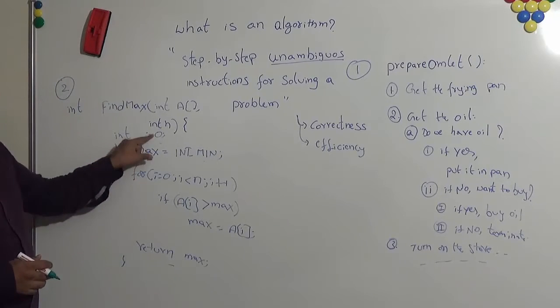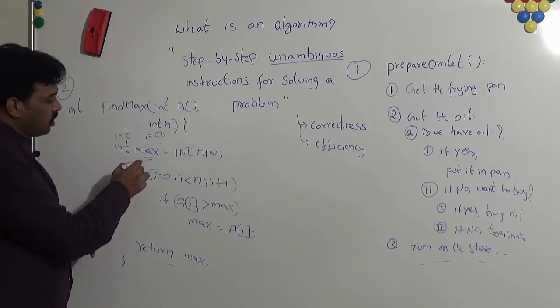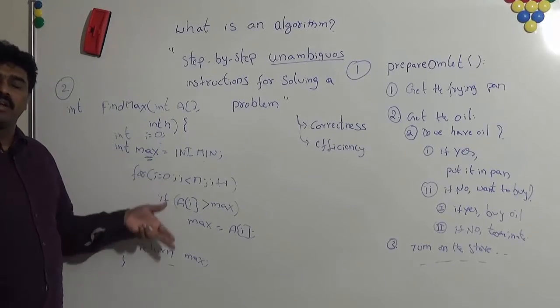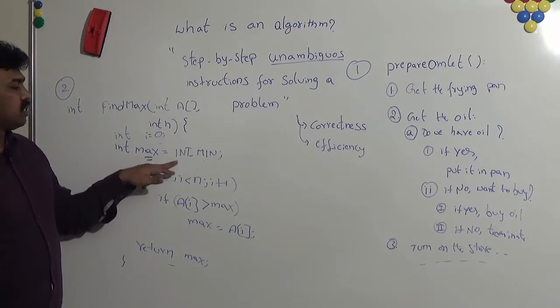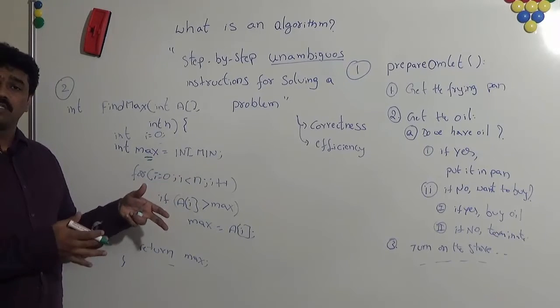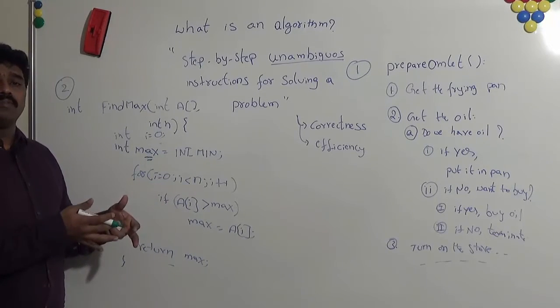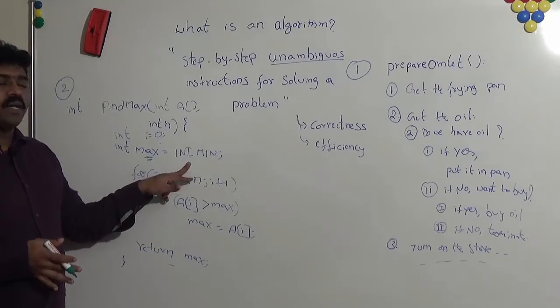Let us consider this one. So we are doing some initialization. Assume that this is the max variable, and at the end of the function this will have the max element in the given array, which is initialized with integer minimum. That means among the integer values, whatever is the minimum, it is defined in C and C++.